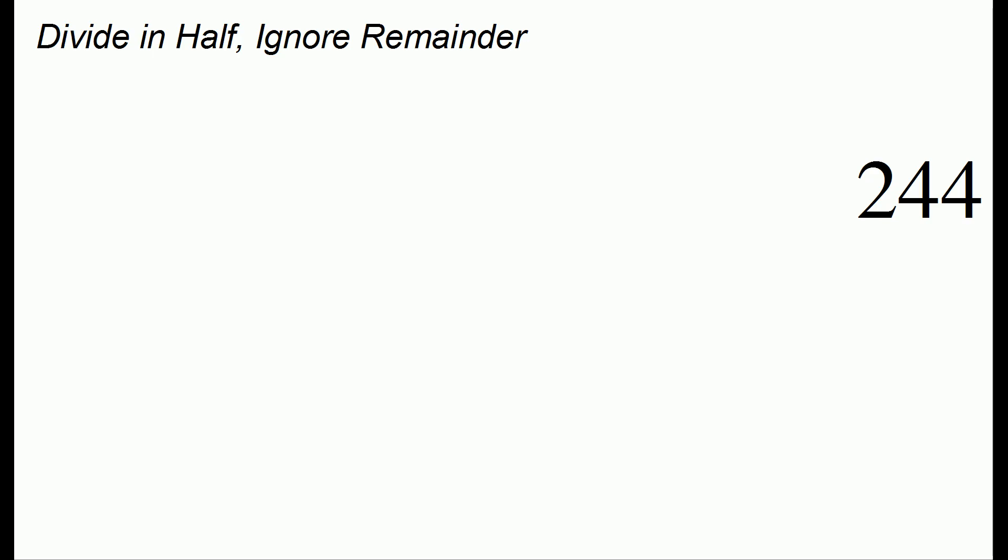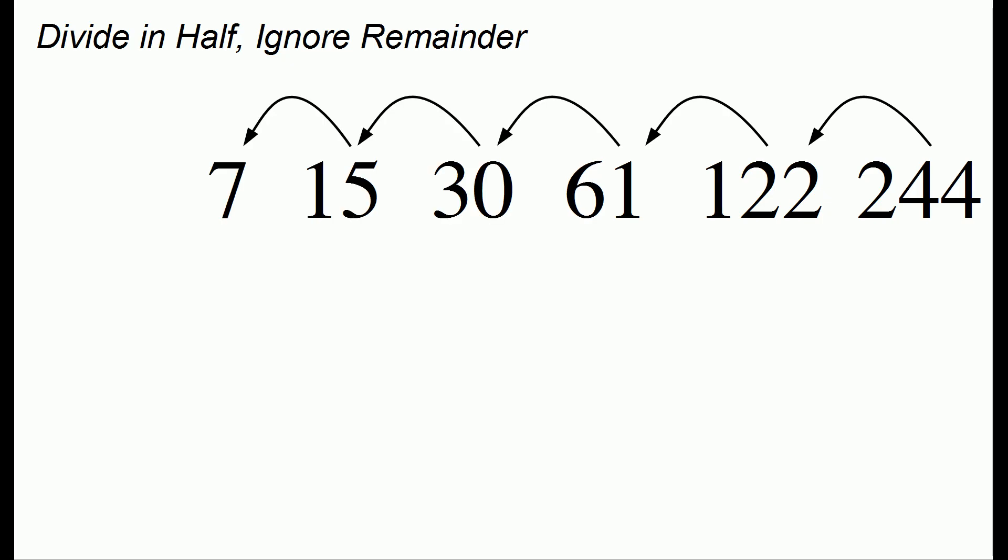We're going to keep repeatedly dividing the number in half and ignoring the remainder. So we get 122, dividing in half again we get 61, then we get 30, 15, 7.